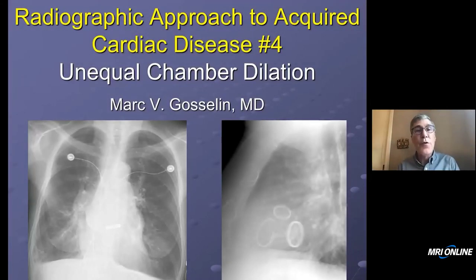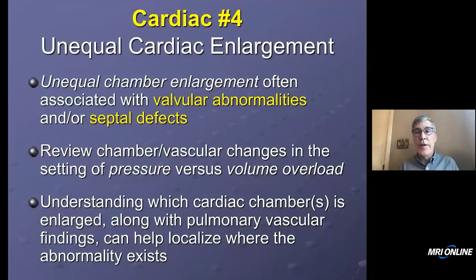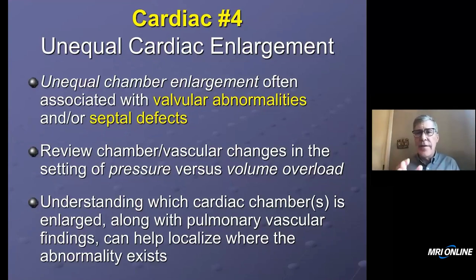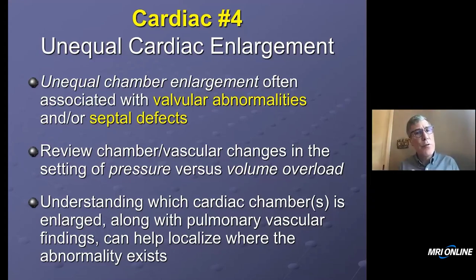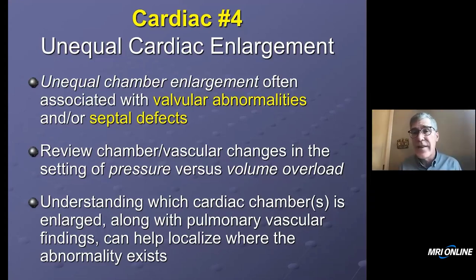Hey everybody, it's Mark and we're moving on with our radiographic approach to the heart, old school. We're going to shift gears a little bit and look at the radiograph in the setting of unequal chamber enlargement. When you see it and you're able to decipher it from the radiograph, it usually indicates a valvular abnormality and occasionally a septal defect. The pulmonary vascular changes are going to be really crucial, and understanding them can get you to a pretty narrow differential or even the diagnosis.